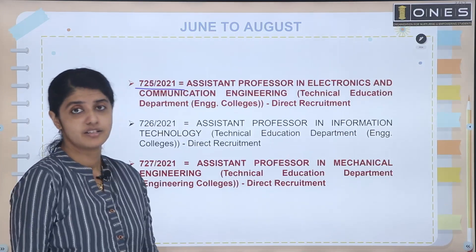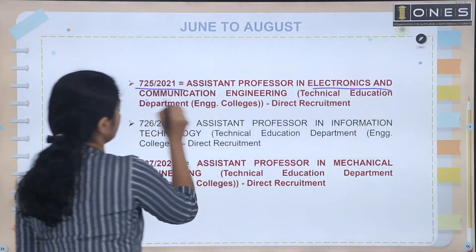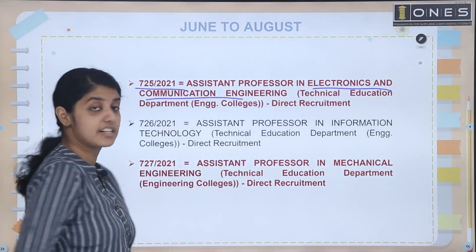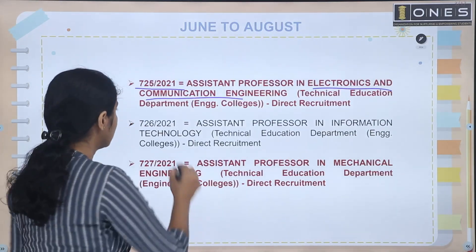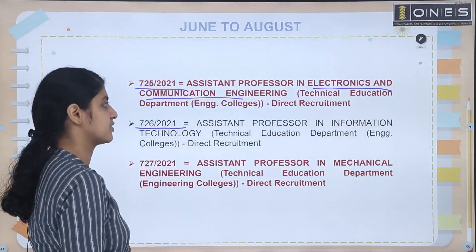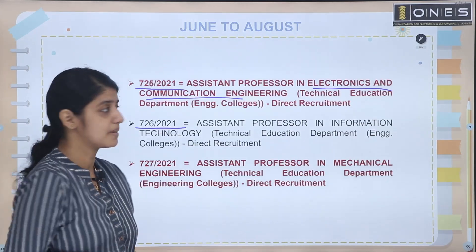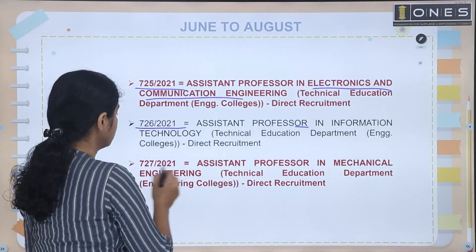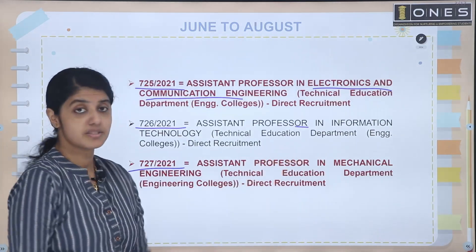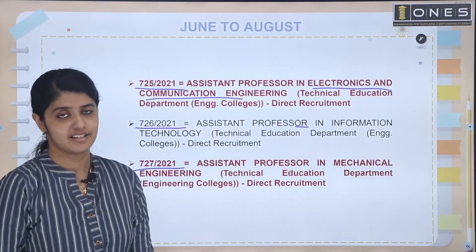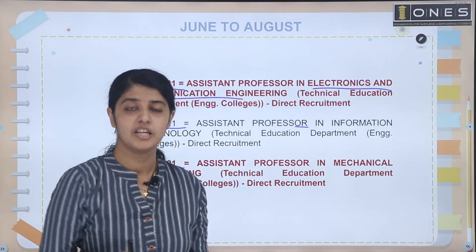725/2021 — that is the other branch: Electronics and Communication. Electronics and Communication are easy — the assistant professor. 726/2021 — the assistant professor in the IT branch. 727/2021 — the assistant professor in Mechanical Engineering. All of the assistant professor exams are in the slot.